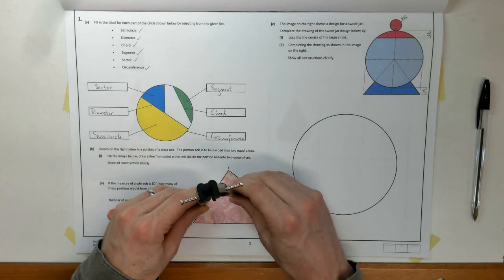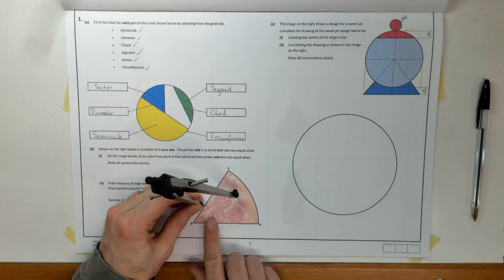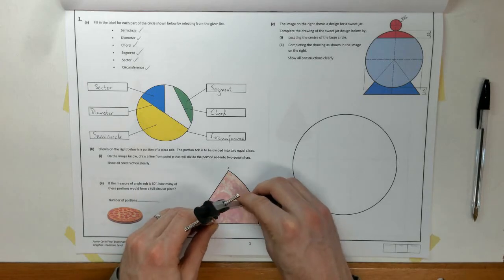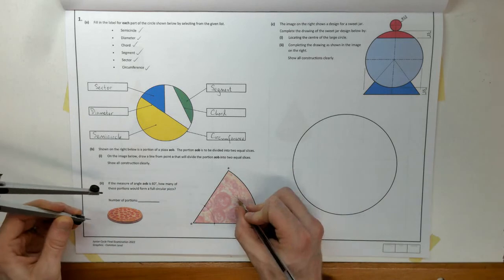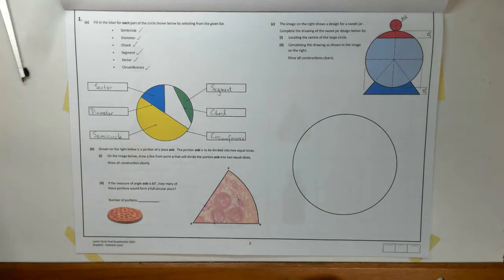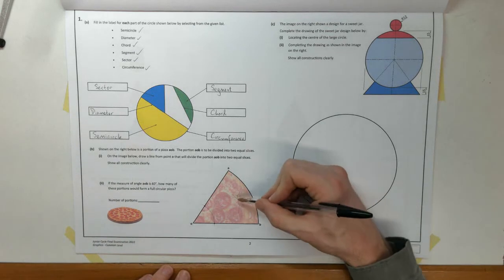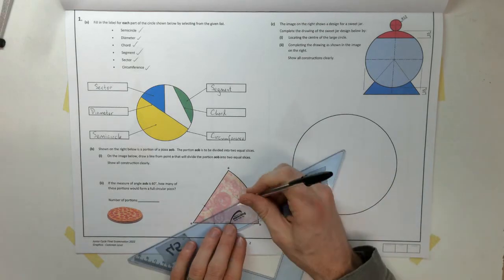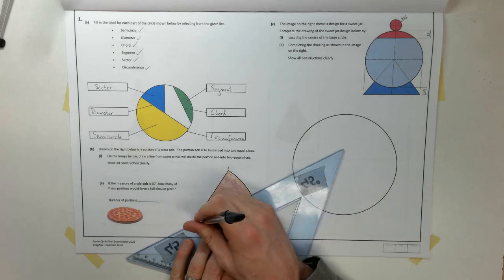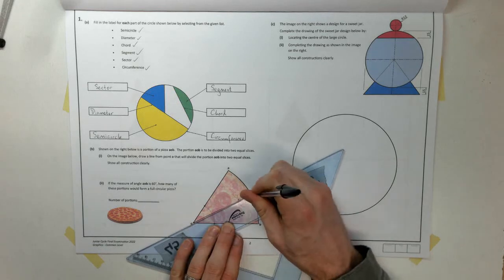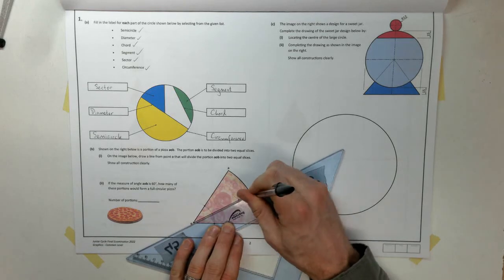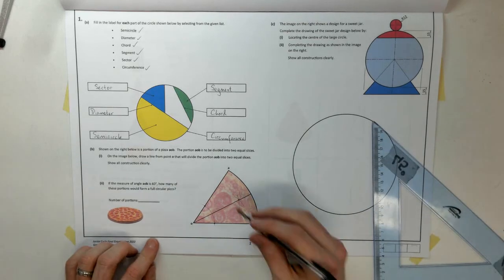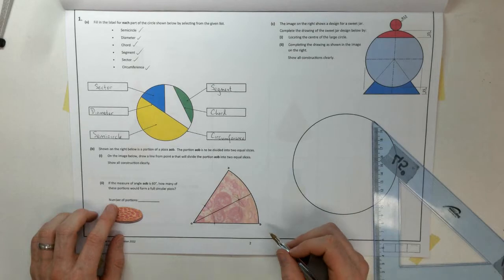But from now on, I can't change the measurement there. So I'm going to swing an arc there. That's one point. Go to my other point. Swing an arc, and that is going to find a bisecting line. So where those two arcs cross. I'm going to join back to O, and I'll extend that on so that I split my pizza perfectly in half.